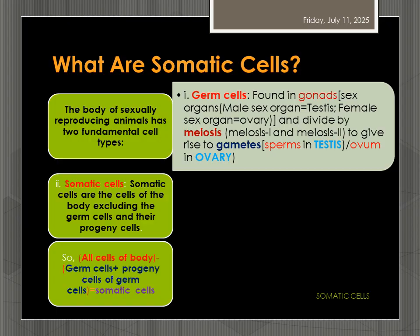But based on the functions in a sexually reproducing animal, there are two functional types. One is germ cell, the other is somatic cell. Germ cells are present in the gonads. They produce the gametes — sperms and ova —